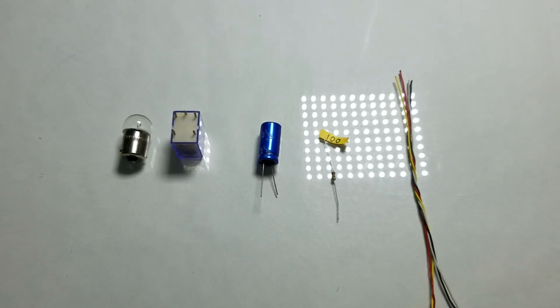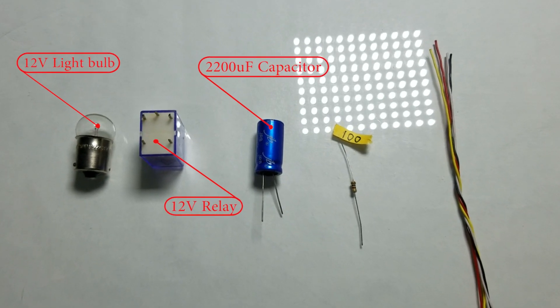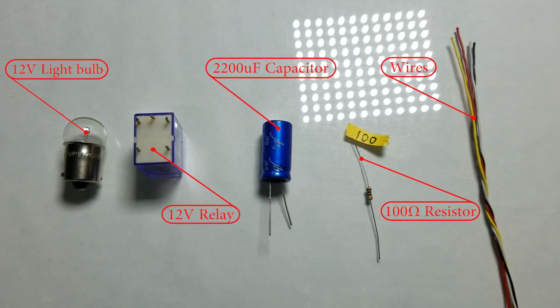To build this device we'll need a 12V light bulb, a 12V relay, a 2200 microfarad capacitor, a 100 ohm resistor, and wires.